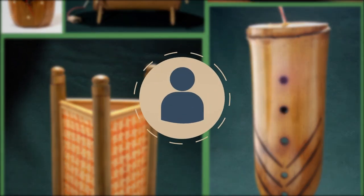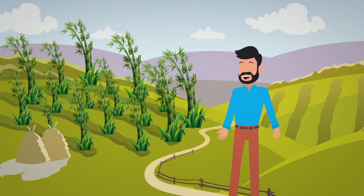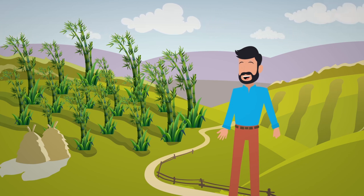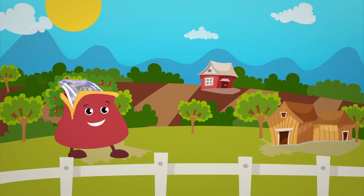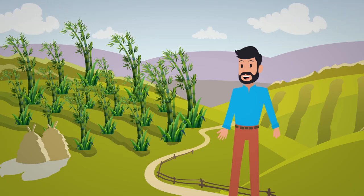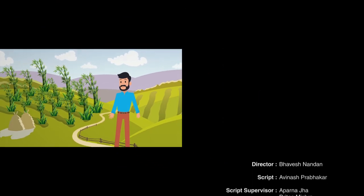These handicraft items go step by step through the bamboo production process to reach the market. The process is well-structured so that quality is maintained. Once bamboo products are made and checked, they are brought to the market. The market linkage is established through this organized value chain process.